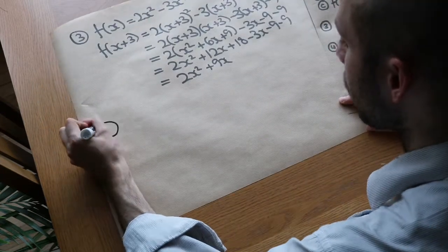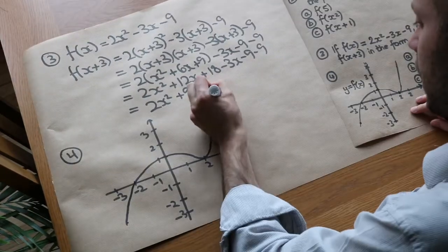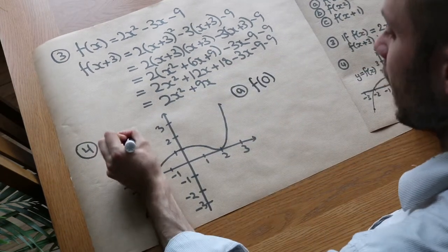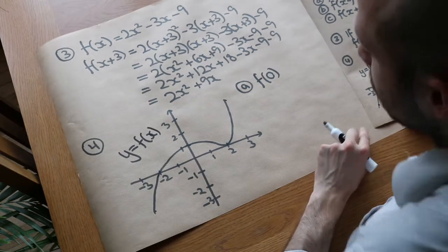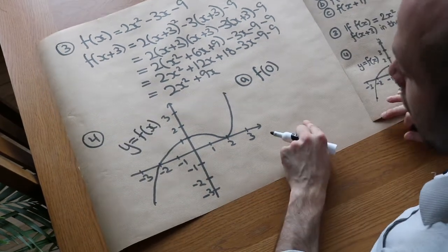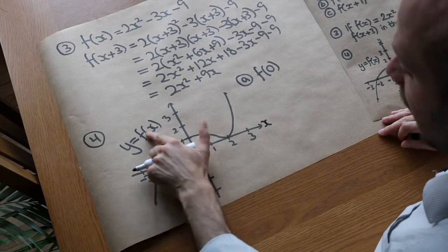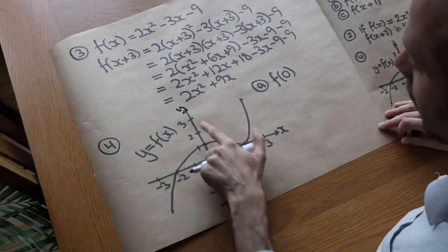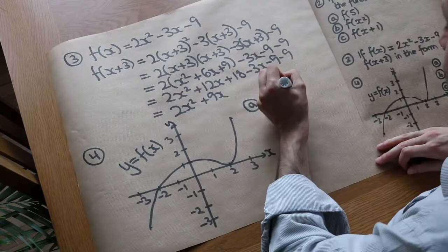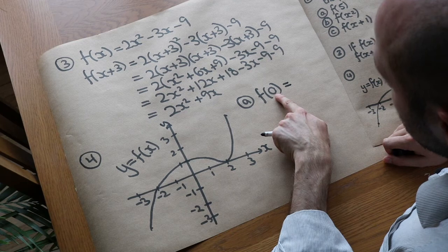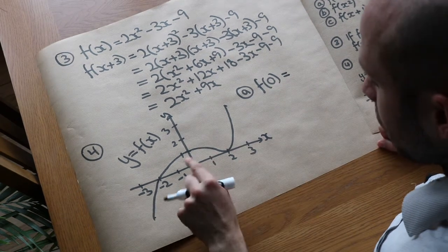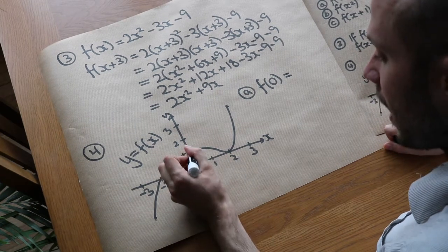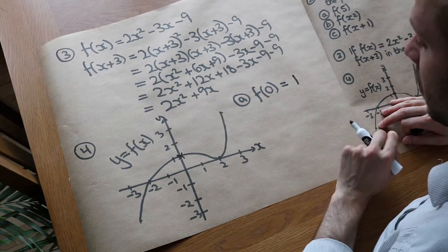And then finally we've got a graphical question. I've drawn this big for you. We first want to find f of zero. This is a sketch of y equals f of x, so it's possible to draw a function as a graph. The x values are the input of the function, and the y values are the output. So when we say f of zero, the input is the x value zero — what is the y value on the graph? Well, the y value when x is zero is one. So the output would be one.